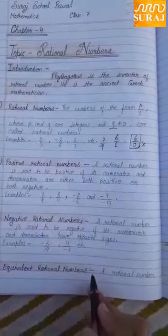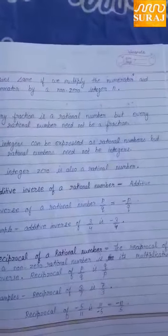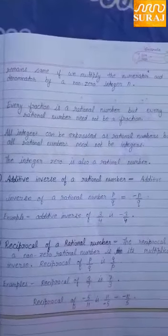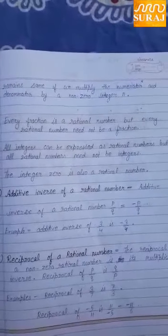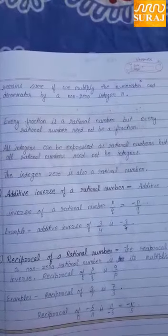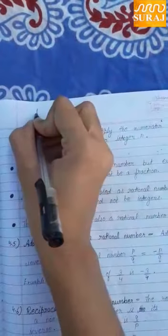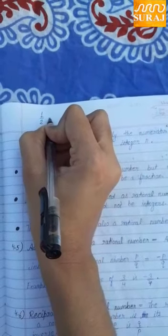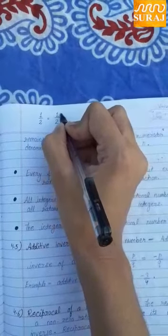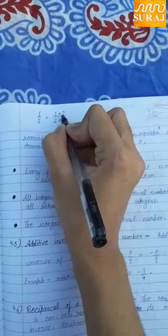Equivalent rational numbers: A rational number remains the same if we multiply the numerator and denominator by a non-zero integer. Iska meaning yah hua ki agar hum ek rational number ke P and Q — numerator and denominator dono ko ek same non-zero integer se multiply kar dete hain, to hume equivalent rational number milta hai.